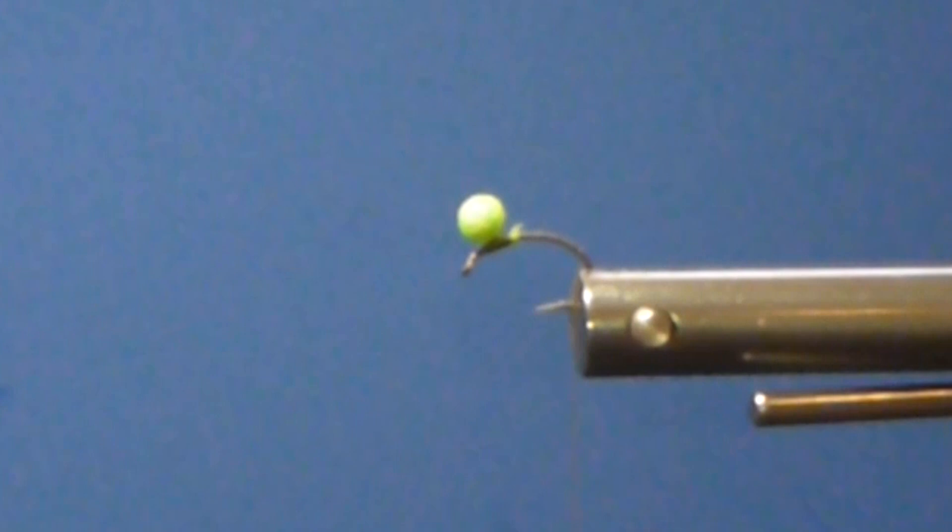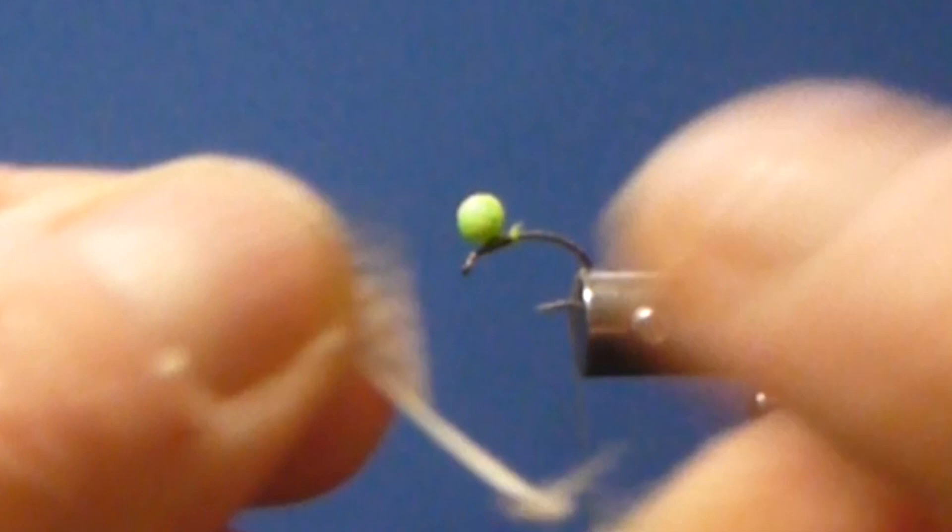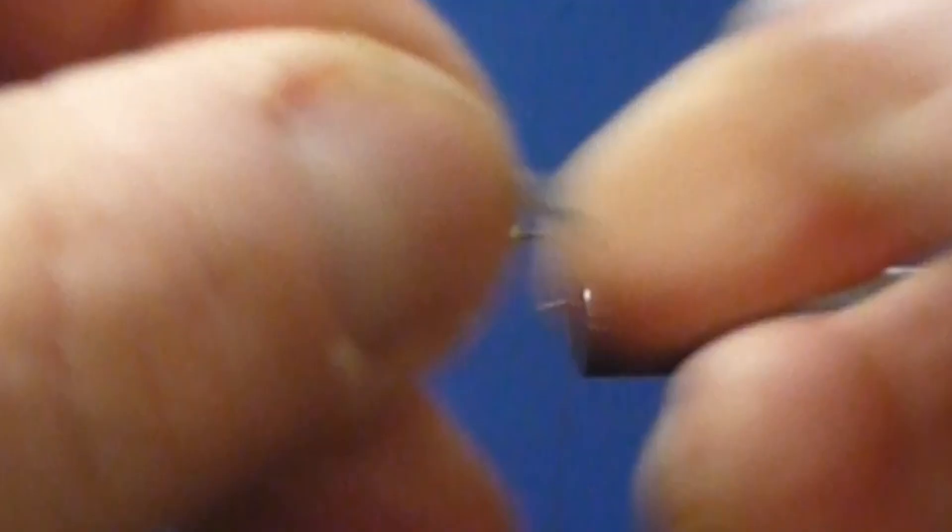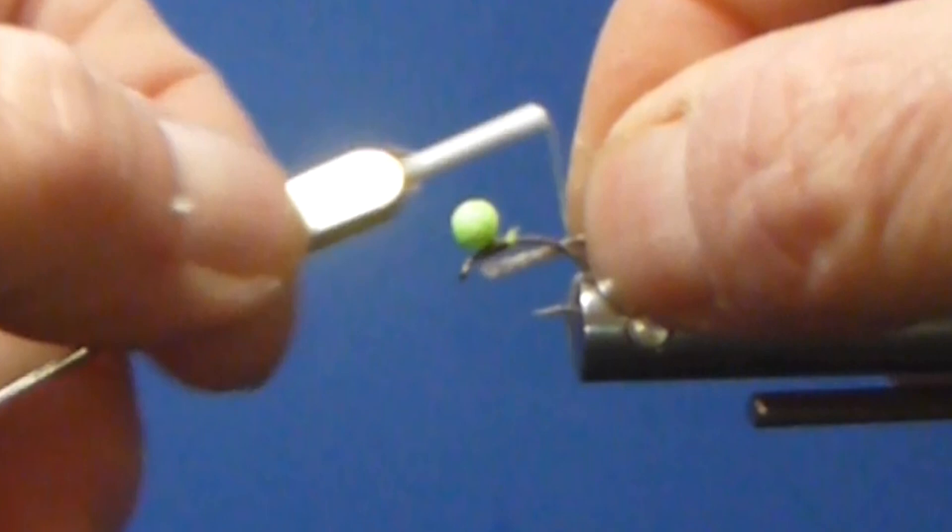So now we'll come in with partridge. We've got a little, some of these tips here are a little too fuzzy. I want some nice straight tips for the tail. Pinch off a few from the side here. Make sure the tips are lined up nice. Catch them in at the end here. There we go. Wrap the butts down.